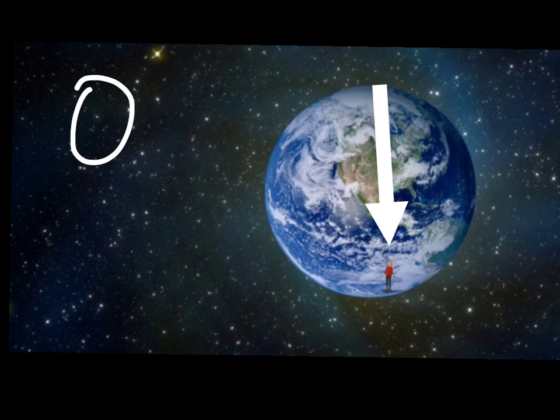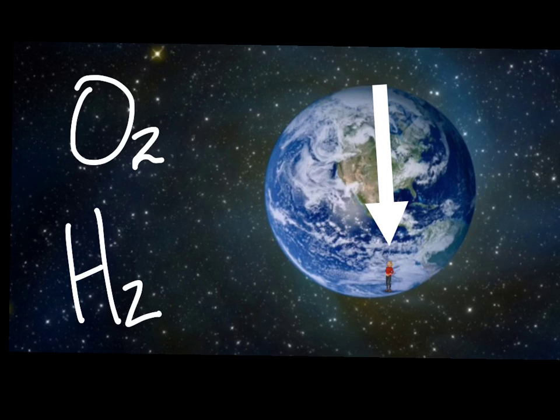Earth is unlike every other planet in the solar system. It is the only planet that has an atmosphere containing 21% oxygen and the only planet that has liquid water on its surface. It's the only planet in the solar system that has life.